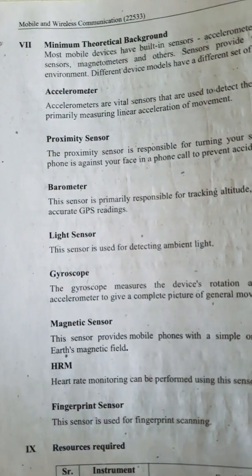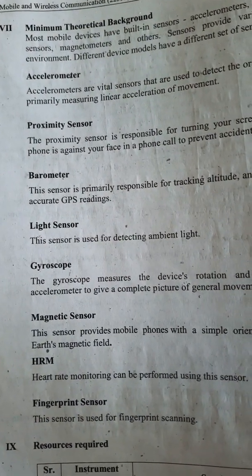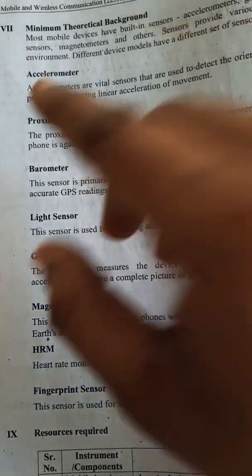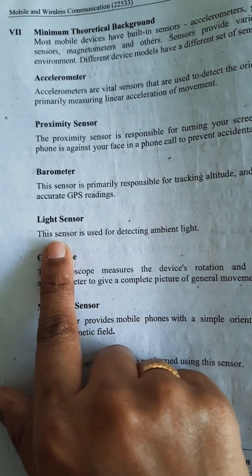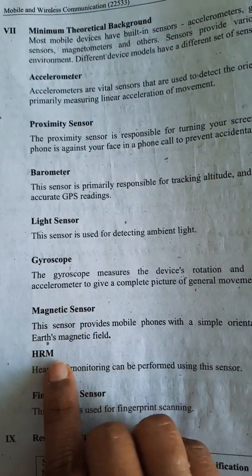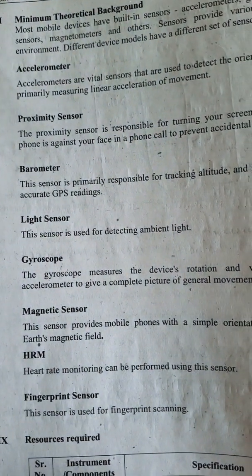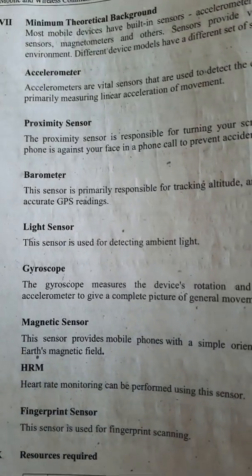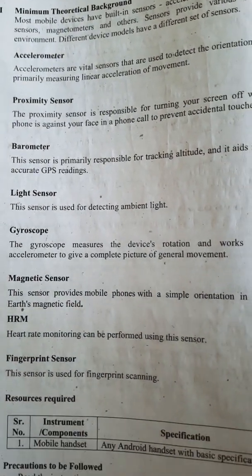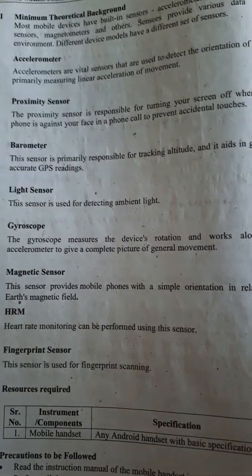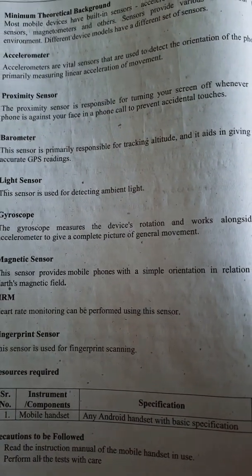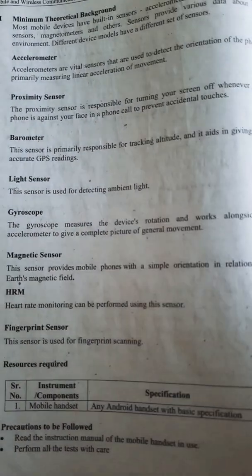Even the phone you are using now will have different sensors. The common sensors are normally accelerometer, proximity sensor, barometer, light sensor, gyroscope, magnetic sensor, heart rate monitoring, and fingerprint sensors. The accelerometer is used to detect the orientation of the screen. The proximity sensor is what causes the screen to automatically turn off and on when you pick up or hold the phone.